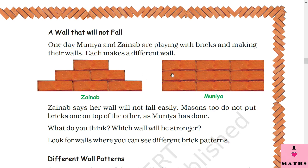Which wall do you think will be stronger — Zainab's or Munya's? Imagine if we throw a ball at the joint of Munya's wall, all four bricks will fall. But if we throw the ball at Zainab's wall at that point, one brick may fall but the others may stay because the bricks are supporting each other. That is why walls are generally made like Zainab's — it is the stronger pattern.